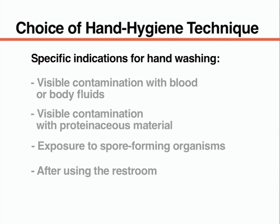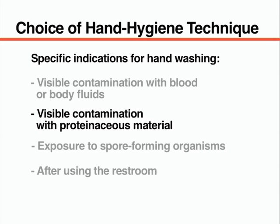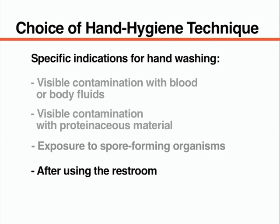There are a few specific indications for which hand washing should be performed instead of hand rubbing. Hand washing must be conducted when the hands are visibly contaminated with blood or body fluids, or with proteinaceous material. Hand washing must also be performed after exposure to spore-forming organisms — for example, after caring for patients with diarrhea associated with Clostridium difficile, or after exposure to Bacillus anthracis. Finally, hand washing should be performed after using the restroom.